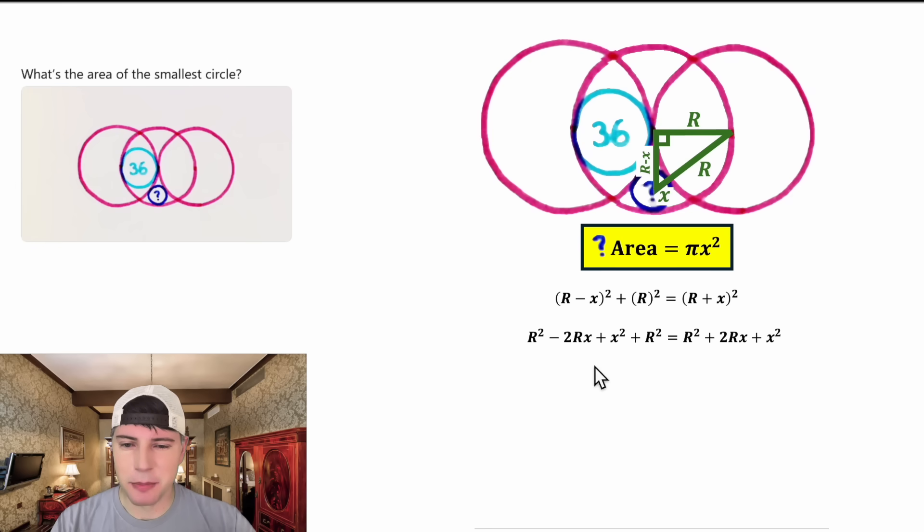Now we can simplify this. Both sides of the equation contain a big R squared that we can subtract from both sides. They also contain an x squared, so let's subtract that from both sides. Each of these matched pairs will cancel each other out. We're left with negative 2 big Rx plus big R squared equals 2 big Rx. On the right-hand side, 2 big Rx plus 2 big Rx is equal to 4 big Rx.